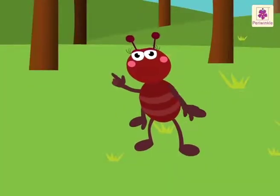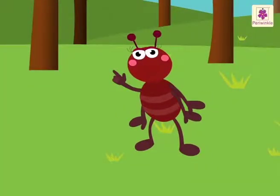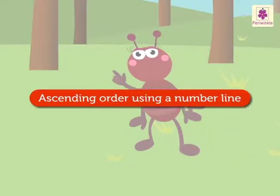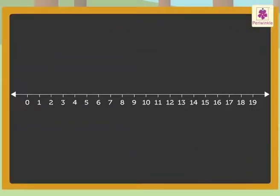Now, let us learn how to arrange the numbers 13, 17 and 14 in ascending order using a number line. Look at the number line. We begin with marking the numbers 13, 17 and 14 on the number line.